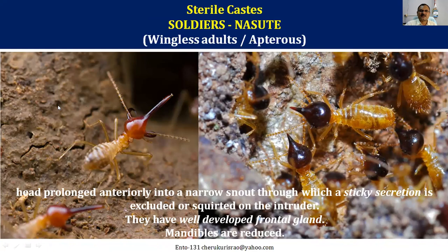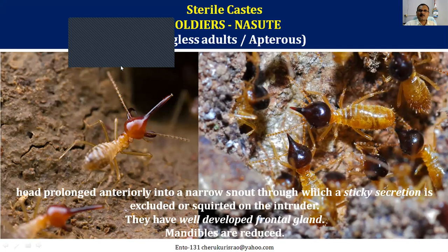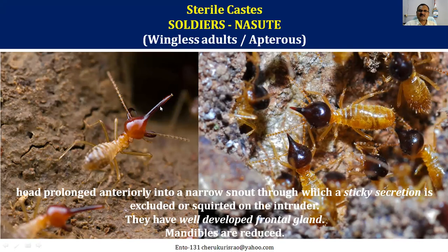Nasute soldiers have a prolonged head that secretes sticky solutions, and the frontal gland also secretes some kind of poisonous materials. The mandibles in nasute soldiers are highly reduced — they don't have well-developed mandibles. So to summarize: there are three types of adults in any colony — winged adults (king and queen), brachypterous (secondary reproductives), and wingless sterile castes (workers and soldiers — mandibulate and nasute types).